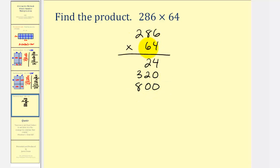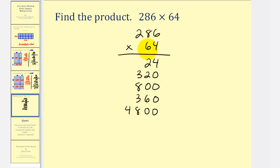Now we'll move to the 6, which is in the tens place value. So the first product is 60 times 6, which is 360. Next we have 60 times 80, because the 8 is in the tens place value — that would be 4,800. And then finally we have 60 times 200, because the 2 is in the hundreds place value. 60 times 200 is 12,000.